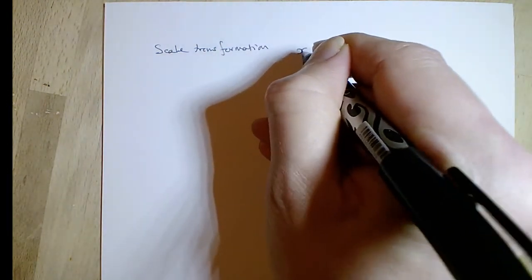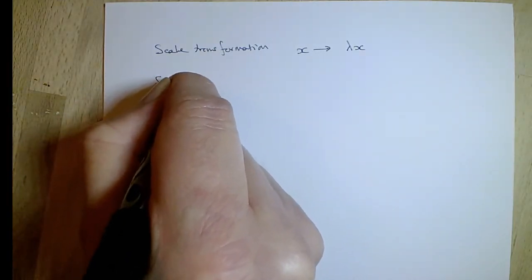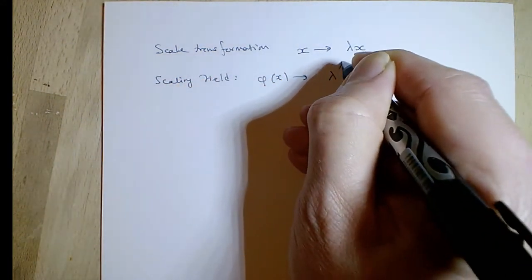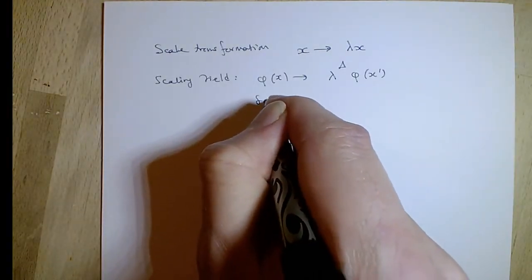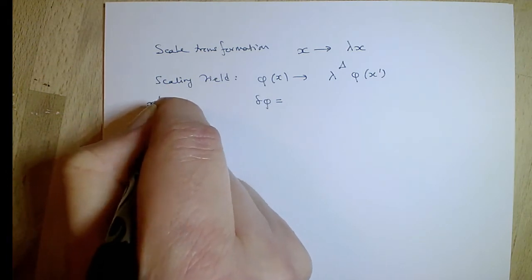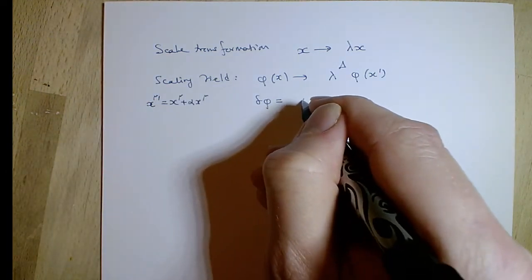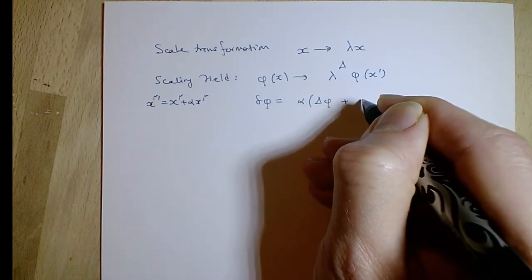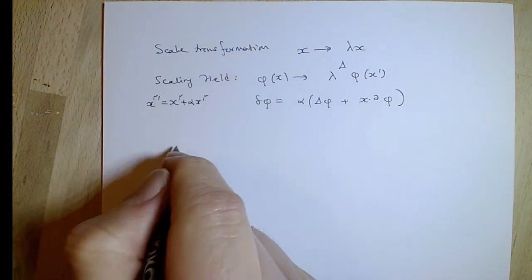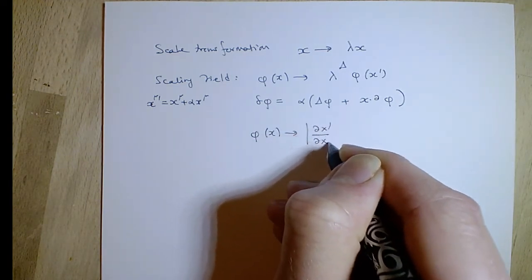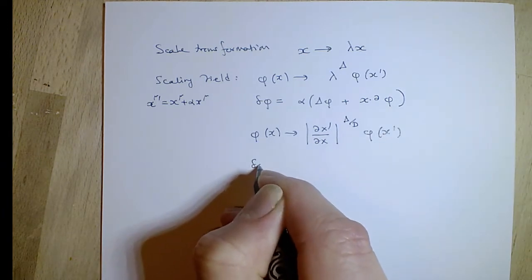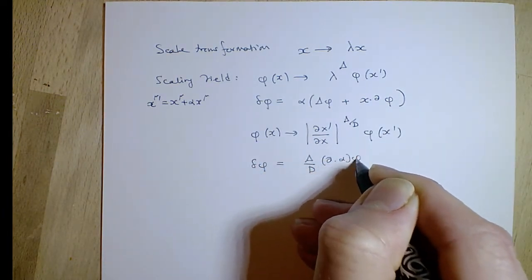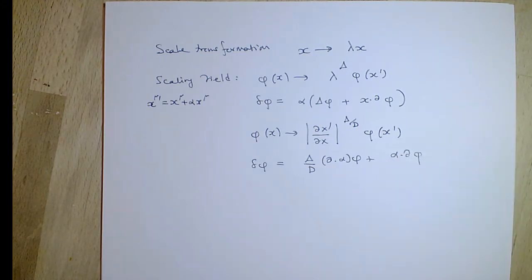Before we go into more complicated transformations, look at scale transformations: x goes to lambda x. If a field under scaling transformations just transforms with a homogeneous factor, we say it's a scaling field. Under infinitesimal transformations the change in the field is given by an expression involving the Jacobian and delta divided by d, where delta is the scale dimension. This transformation with the power of the Jacobian is a particular transformation law for a scalar field.